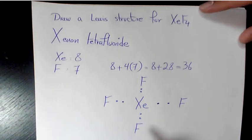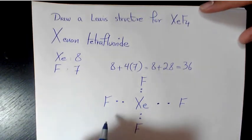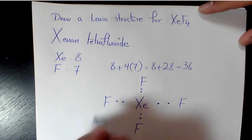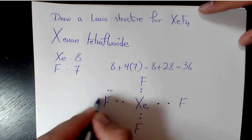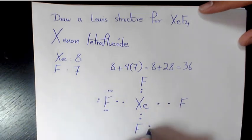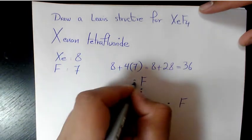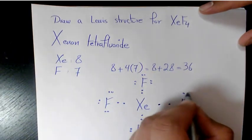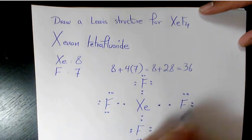Now we need to place pairs of the remaining valence electrons as lone pairs on the surrounding fluorine atoms. Each fluorine atom gets three lone pairs — six electrons each.